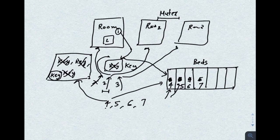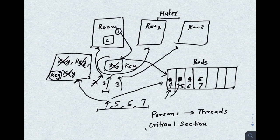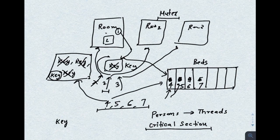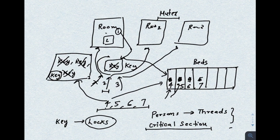In terms of operating systems: the persons are the multiple threads, and the rooms represent the critical section. There is actually only one critical section, but you are allowing multiple threads to enter it at a time. The keys are similar to locks — any thread has to obtain a key before entering the critical section. That is the concept of semaphore. Hopefully the difference between spin lock, mutex, and semaphore is now clear from this example.